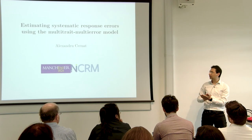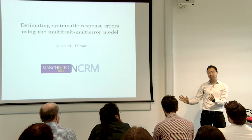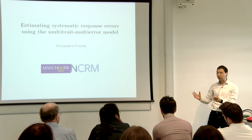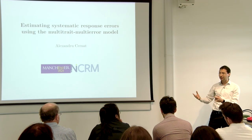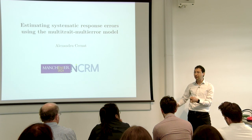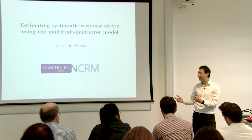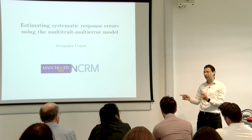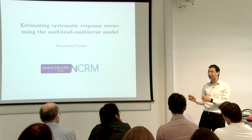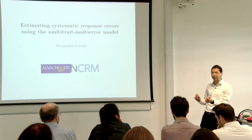Just to recap before I start: we saw there are different types of measurement error. The main one is random error, which means when people are not consistent. We ask them the same thing, the true score is the same — say, attitudes towards immigrants — but somehow they're not consistent. Sometimes they're slightly more positive, sometimes slightly less positive. That's what we call random error.